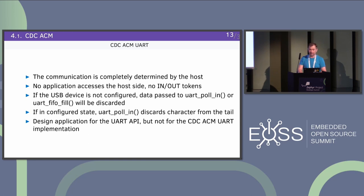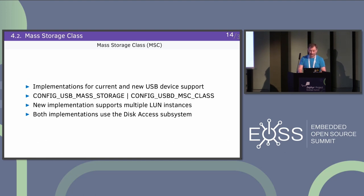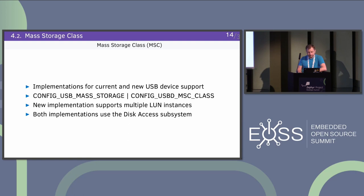I hope it works — if not, blame me. Mass storage class is another one that's difficult to understand how to configure. We have an implementation for both the current and new USB device support in the tree. There are two Kconfig options to enable this support. Only Kconfig options are used for mass storage class support — no device tree is needed because it's just a thin layer in the USB stack on top of a SCSI code and the backend used for block devices.